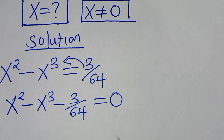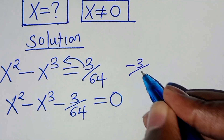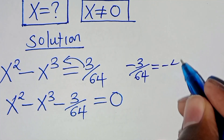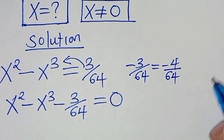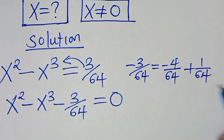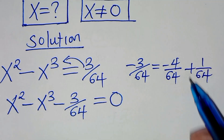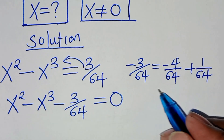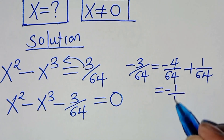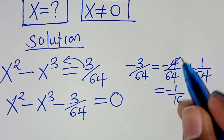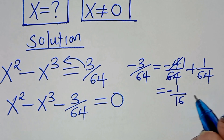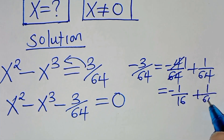We can express minus 3 over 64 as minus 4 over 64, then plus 1 over 64. If you simplify, this is the same thing as minus 1 over 16, since 64 divided by 4 is 16, then plus 1 over 64.